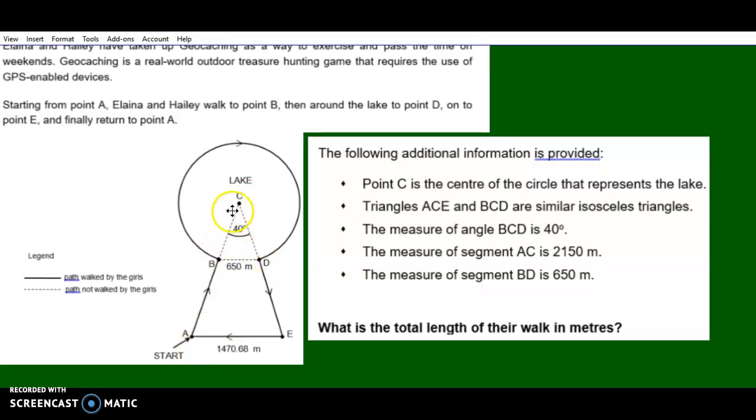That tells us that these two triangles are similar. I can write proportions. That's going to help me. So 40 degrees, that's in the picture. AC is 2150 meters. And this is 650 meters for BD.